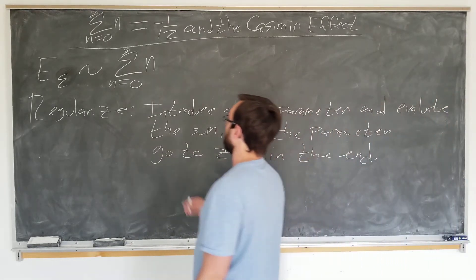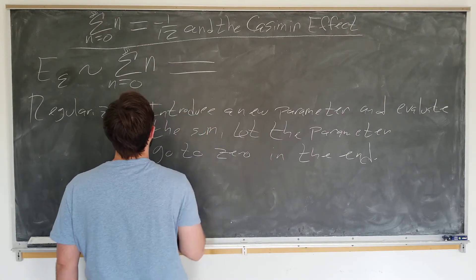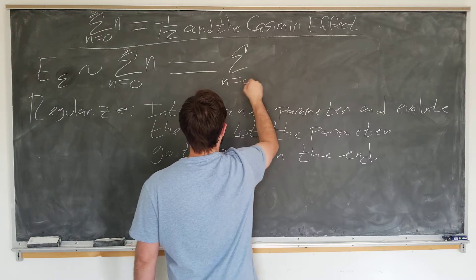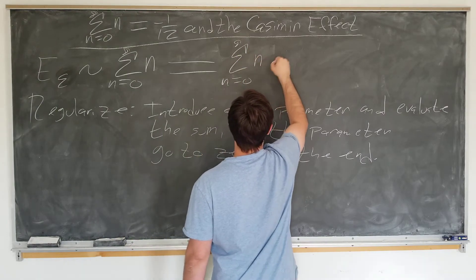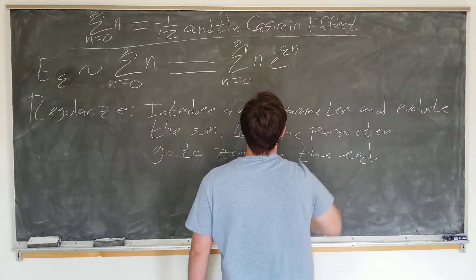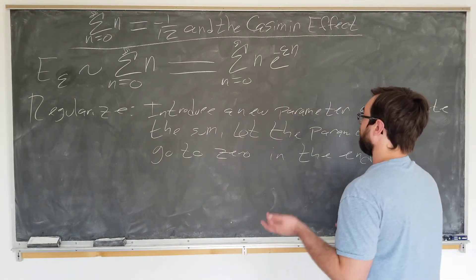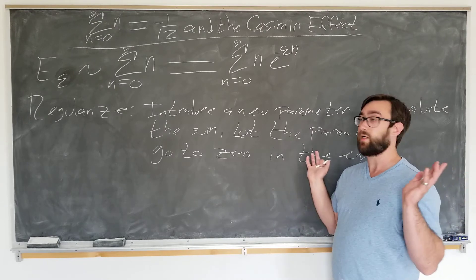Okay, so in this particular case, we're going to be using a new sum, sum from n equals zero to infinity of n times e to the minus epsilon n. Notice epsilon goes to zero, it becomes the initial sum. And from here, we just have to see how this helps us evaluate.